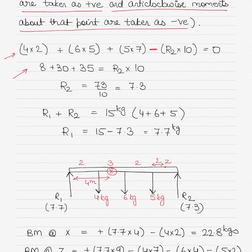If you add these together: 8 + 30 + 35 and take R2×10 on the other side, this is the equation, and then you can calculate R2 as 7.3. But R1 + R2 equals 15 kilograms because it is the sum total of all the weights acting downwards.